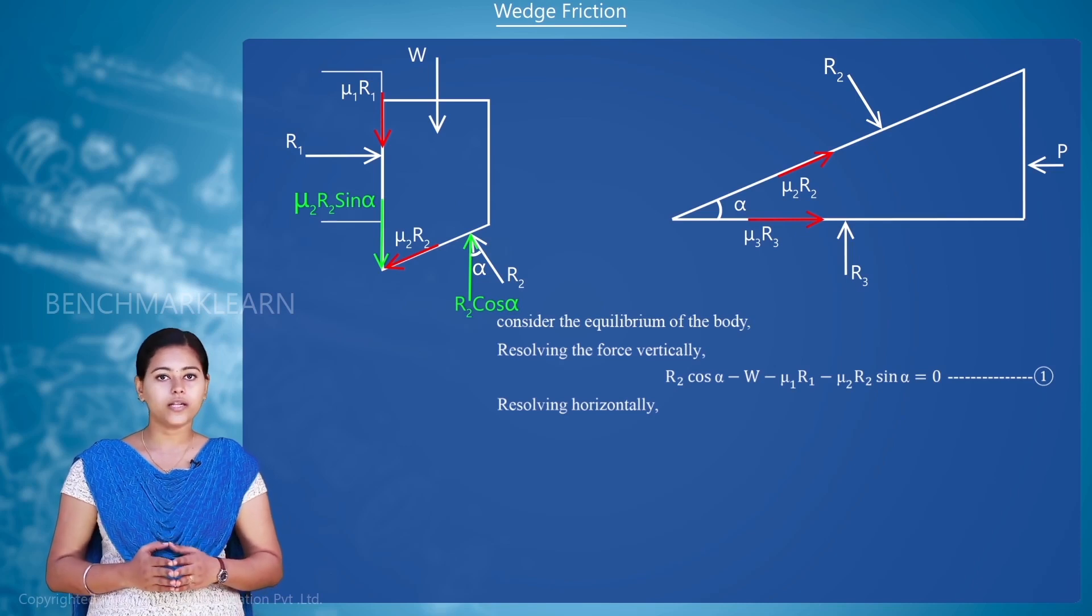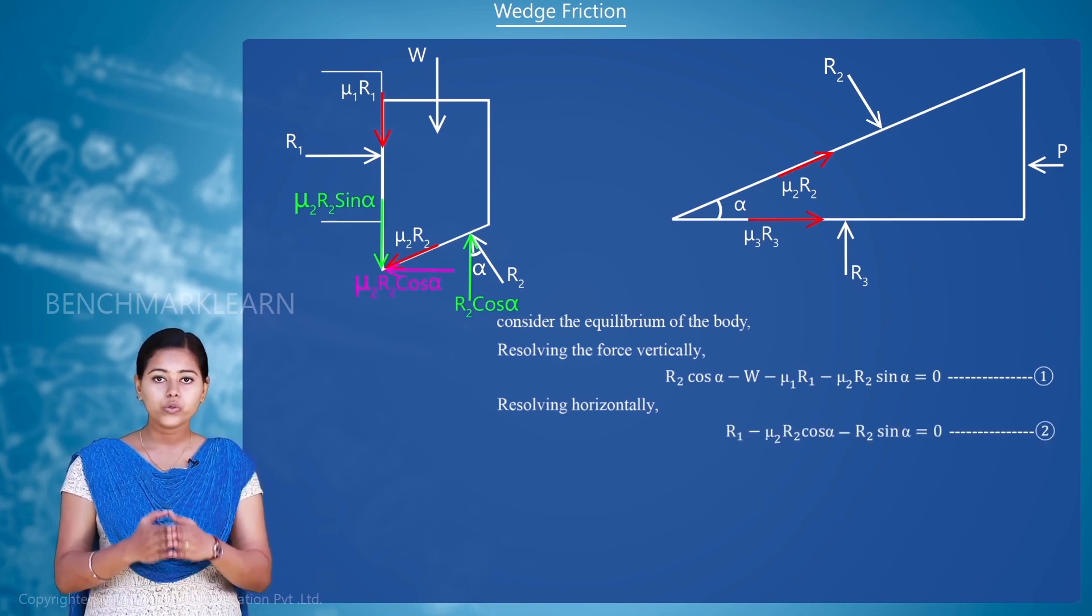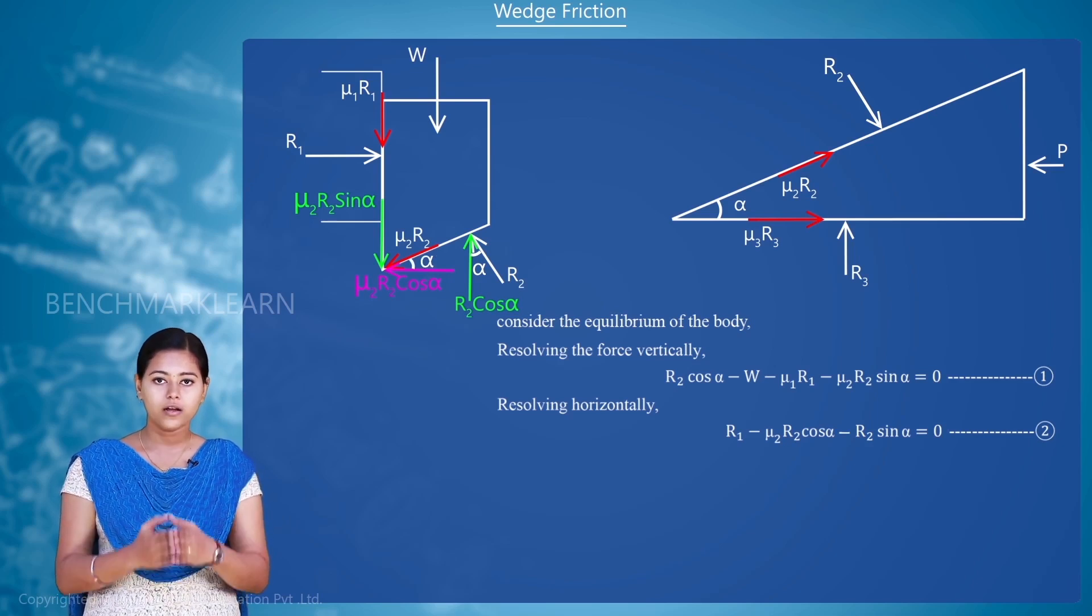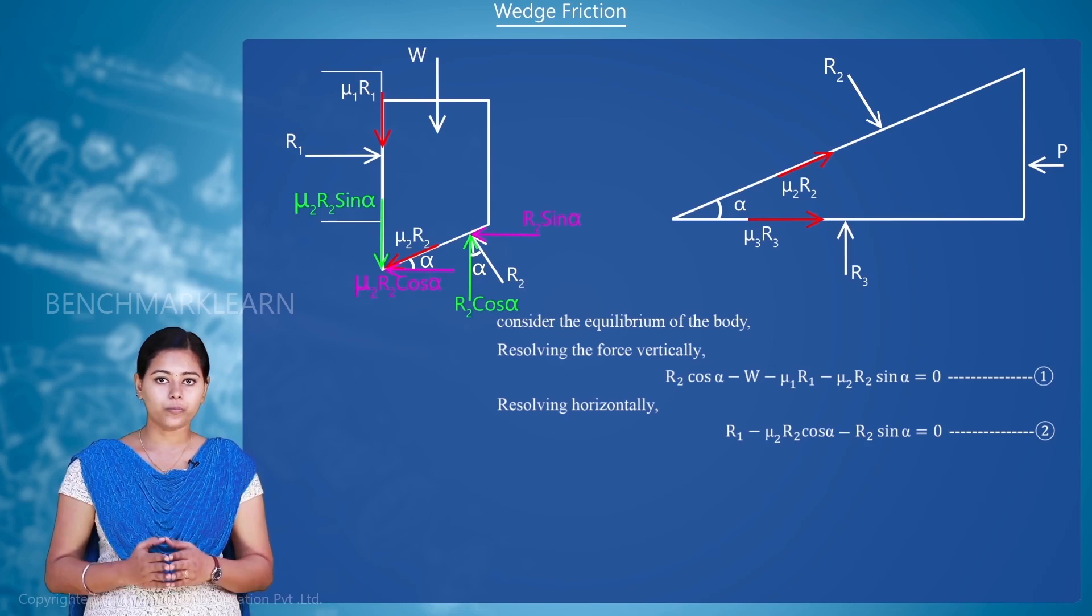Now, resolving horizontally, we can write R1 minus mu2R2 cos alpha minus R2 sin alpha equal to 0. Mark it as second equation.